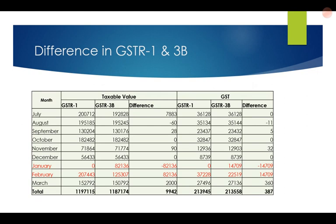Practically, even if you are using web GSTR software, there is a facility to tally GSTR1 and GSTR3B month-wise. The difference will be evident — for example, in this case the major difference appears in January and February. We can drill down further to see what the difference is all about. This report can be used for finding out the difference between GSTR1 and GSTR3B.